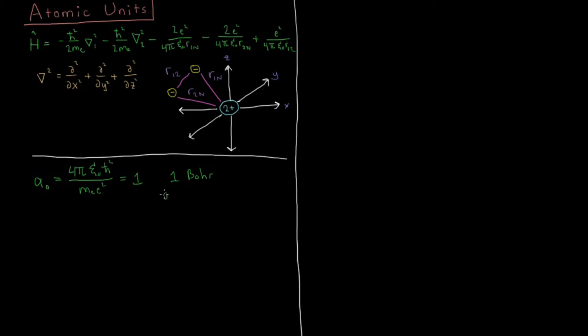And 1 Bohr is going to be equal to 0.529 angstroms which equivalently is 5.29 times 10 to the minus 11th meters. So it would be 52.9 picometers as well. So that's length.